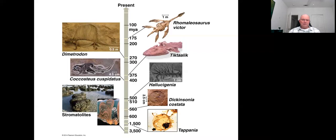Many of these hairy reptiles went extinct at this point, but fortunately some survived. Shortly after, they split into two branches: the diapsids, which would lead to all reptiles including dinosaurs and birds, and the synapsids, which would ultimately give rise to mammals.